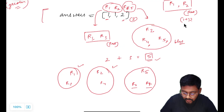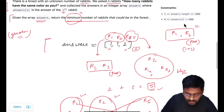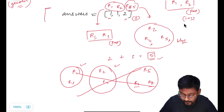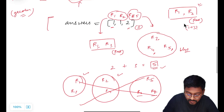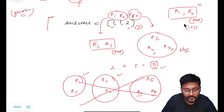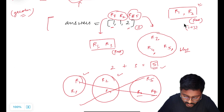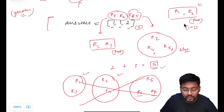We won't consider this possibility because we have to minimize the result. We will always consider that rabbits with the same answers will definitely belong to the same group. So if a rabbit says there are two more rabbits with the same color, rabbits with the same answer values might belong to the same group.